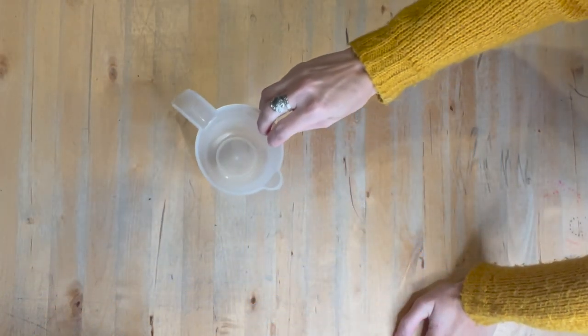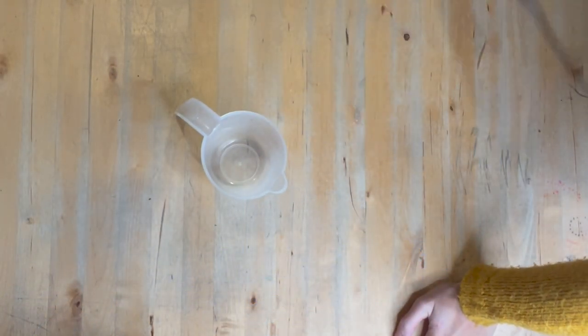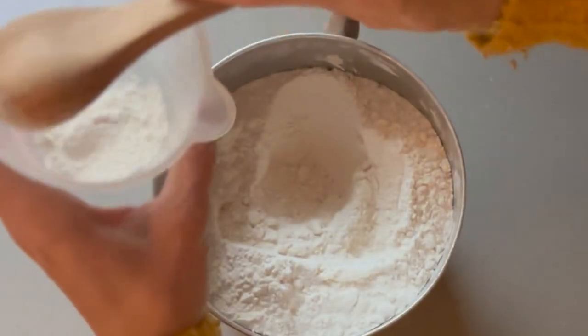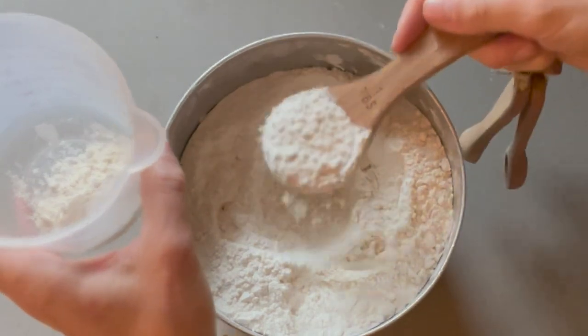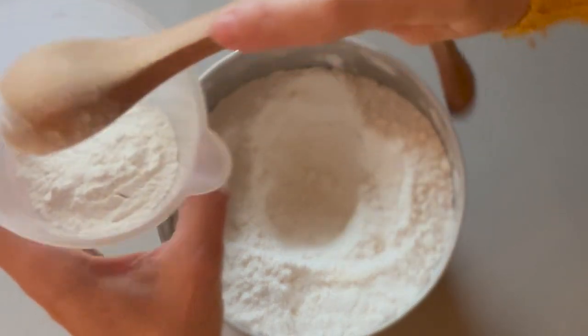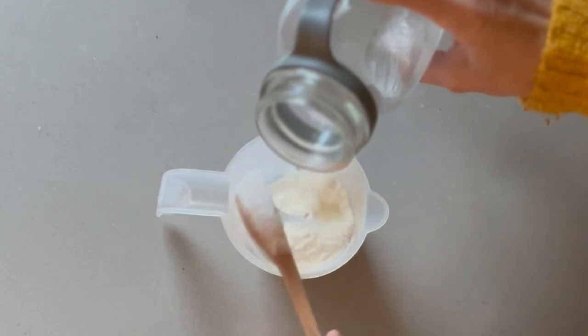So the first thing we need to do is mix up the paste. I'm starting with equal parts of flour and water. I'm just going to do three tablespoons of flour and then three tablespoons of water.